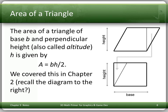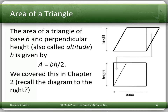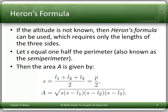The area of a triangle of base B and perpendicular height — also called altitude — h, is given by area equals bh over 2. Heron's formula can be used when the altitude is not known; all you need is the length of the three sides.